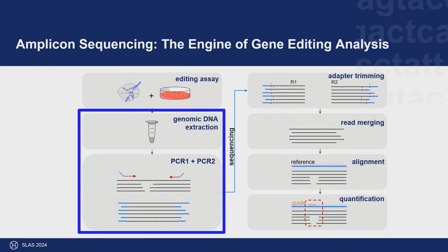The workflow I'm going to discuss today is our amplicon sequencing workflow — the engine that drives gene editing analysis at Scribe. We use gene editing analysis both to test the efficacy of newly engineered CRISPR effector molecules and to perform target identification and lead therapeutic development. Amplicon sequencing begins with an assay — application of a CRISPR molecule onto cells, or an in vivo experiment — where we treat something with a CRISPR effector molecule and then measure at the genomic level what the effect of that molecule was.